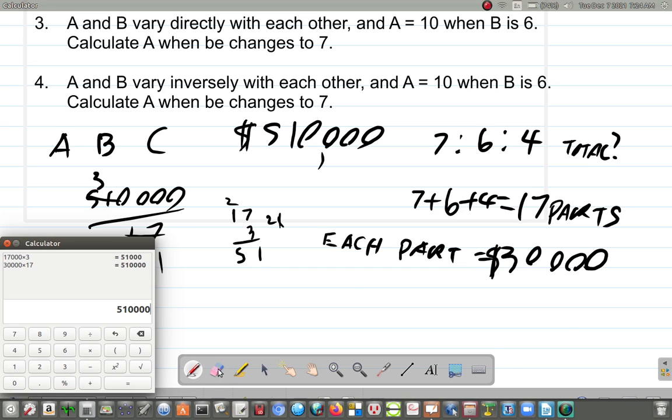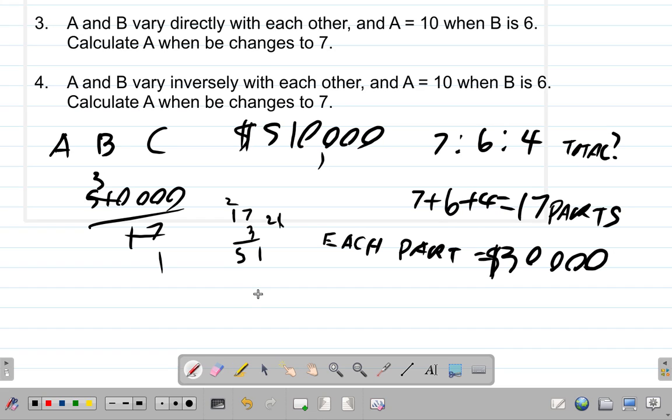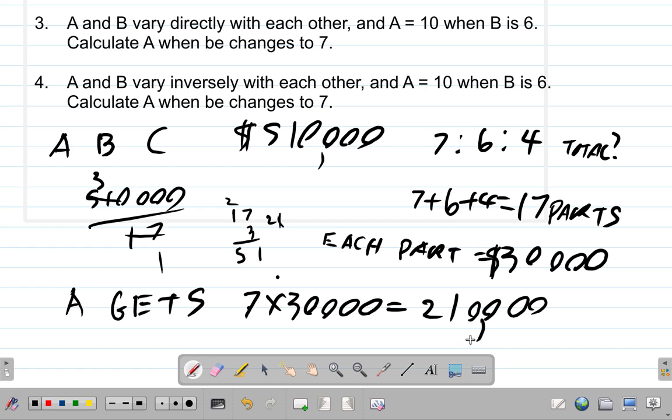So what you have now is that A would get 7 multiplied by the 30,000 dollars, which is what? 7, 3, 2, 1, 21, and 4, 0s. So A would get 210,000 dollars.